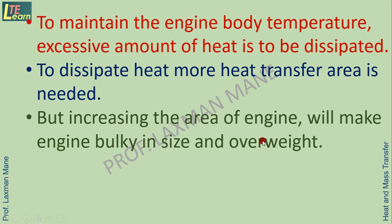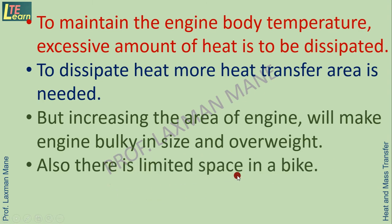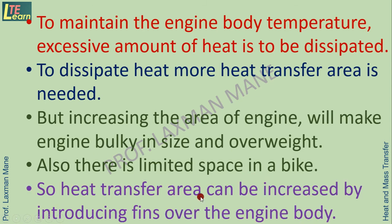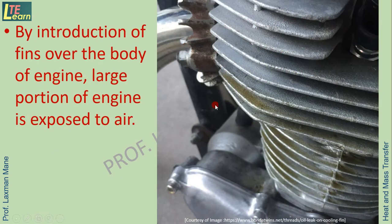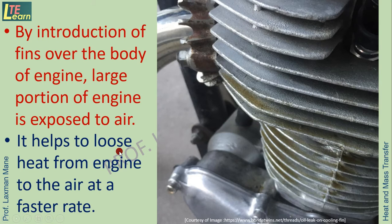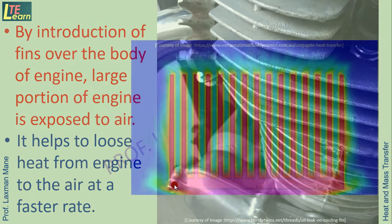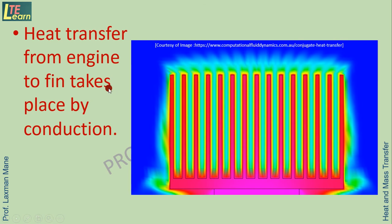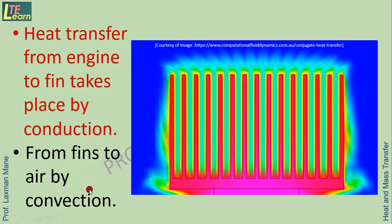But increasing the area of the engine will make it bulky in size and overweight. Also, there is limited space in a bike. So the heat transfer area can be increased by introducing fins over the engine body. By introduction of fins over the body of the engine, a large portion of the engine is exposed to air, which helps to lose heat from the engine to the air at a faster rate. Heat transfer from the engine takes place by conduction, and from fins to air by convection.